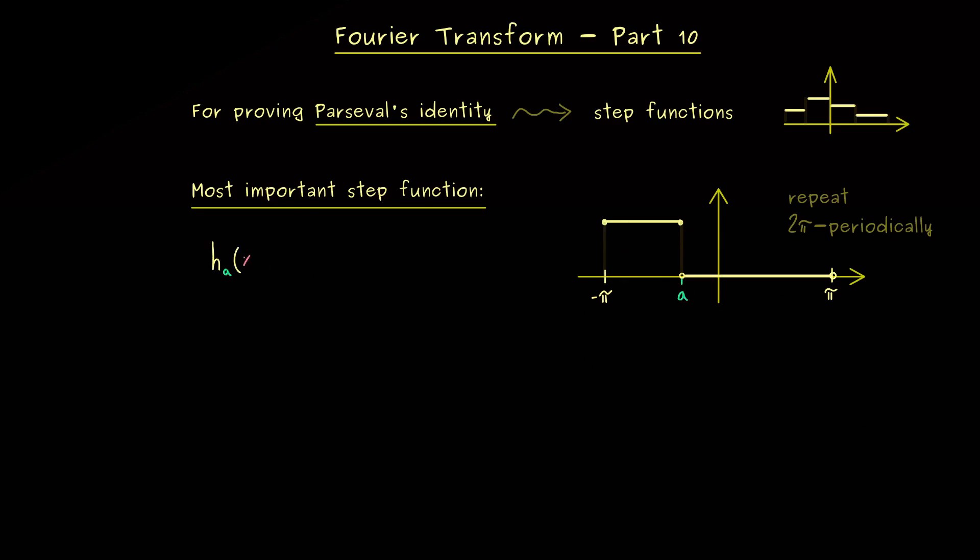So what we have is h_a of x is equal to 1 or 0, depending in which interval x lies. More precisely, we have 1 if x lies in the interval minus pi to a, and we have 0 if x lies in the open interval a to pi. And that's it. That's the whole definition we need here.